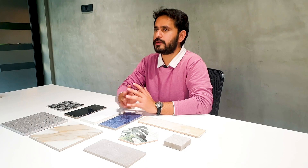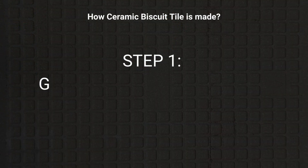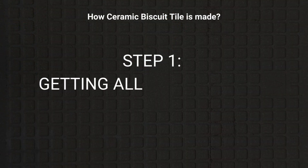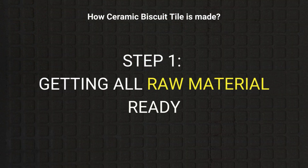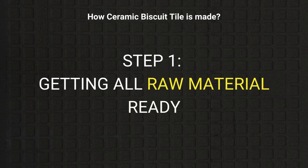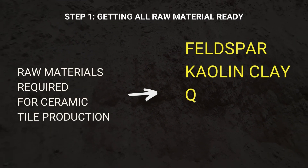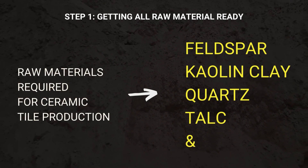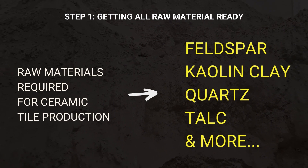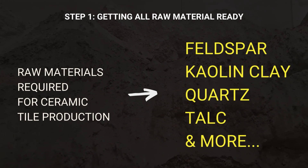We are going to cover the production of the biscuit ceramic tile in three steps. The first step is getting all the raw materials. The main three components of ceramic tile production are feldspar, quartz, and china clay, also known as kaolin clay.